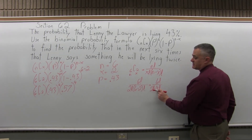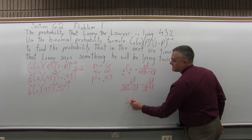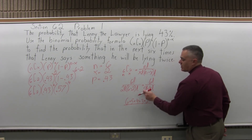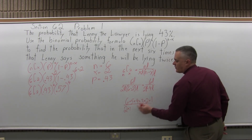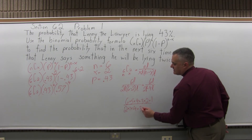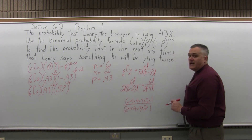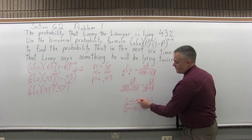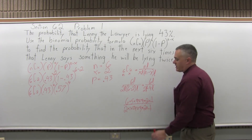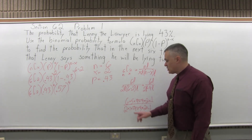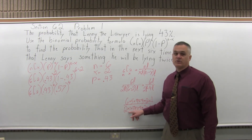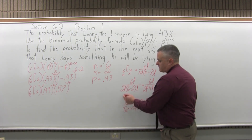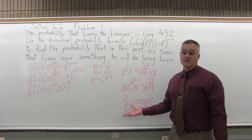The 6 factorial on top is 6 times 5 times 4 times 3 times 2 times 1. In the denominator, 2 factorial is 2, and 4 factorial is 4 times 3 times 2 times 1. We can cancel the 4, 3, 2, 1 from the top and bottom. That leaves 6 times 5 on top and 2 times 1 on the bottom. 6 times 5 is 30, and 30 over 2 reduces to 15.